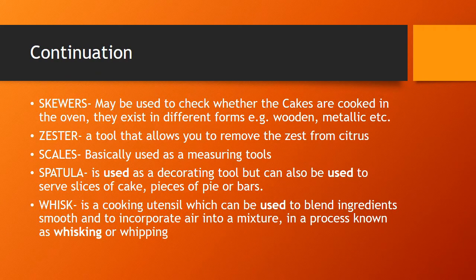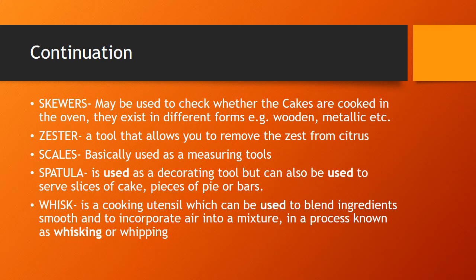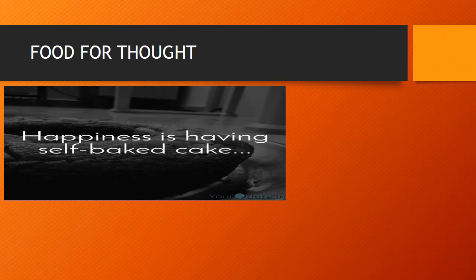A whisk is a cooking utensil that can be used to blend ingredients smooth and incorporate air into a mixture, in a process known as whisking or whipping. In cake making, the whisking method involves whisking eggs and sugar together until the mixture doubles in size, then gently folding in the flour. This method is used in making different types of cakes.